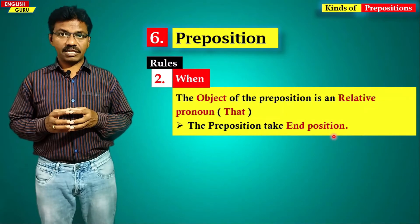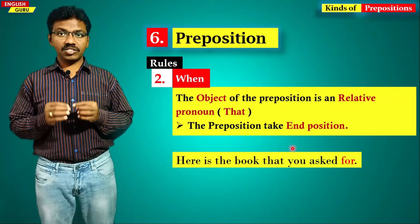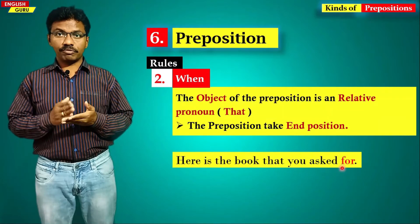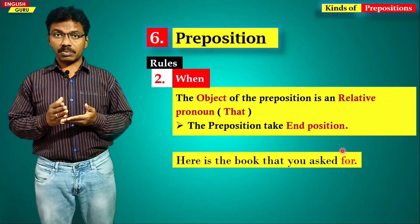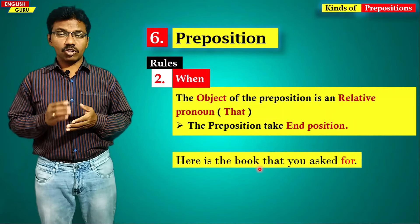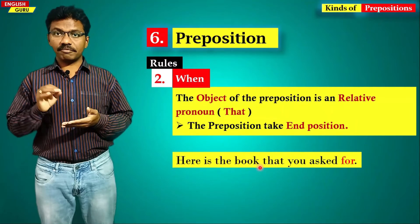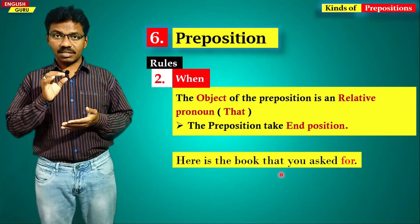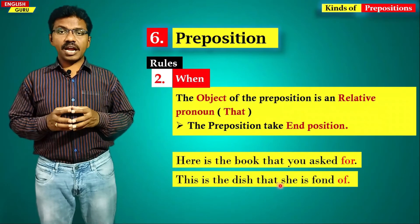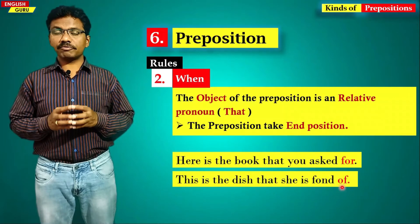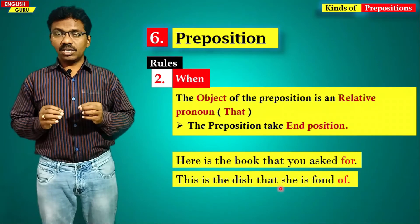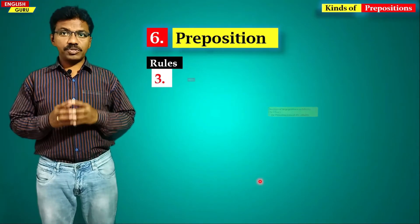The second rule is when the object of the preposition is a relative pronoun 'that' — the preposition also takes the end position. For example, 'here is the book that you asked for' — 'for' is a preposition placed at the end because the object of 'for' is 'that'. Another example: 'this is the dish that she is fond of' — 'of' is a preposition placed at the end.